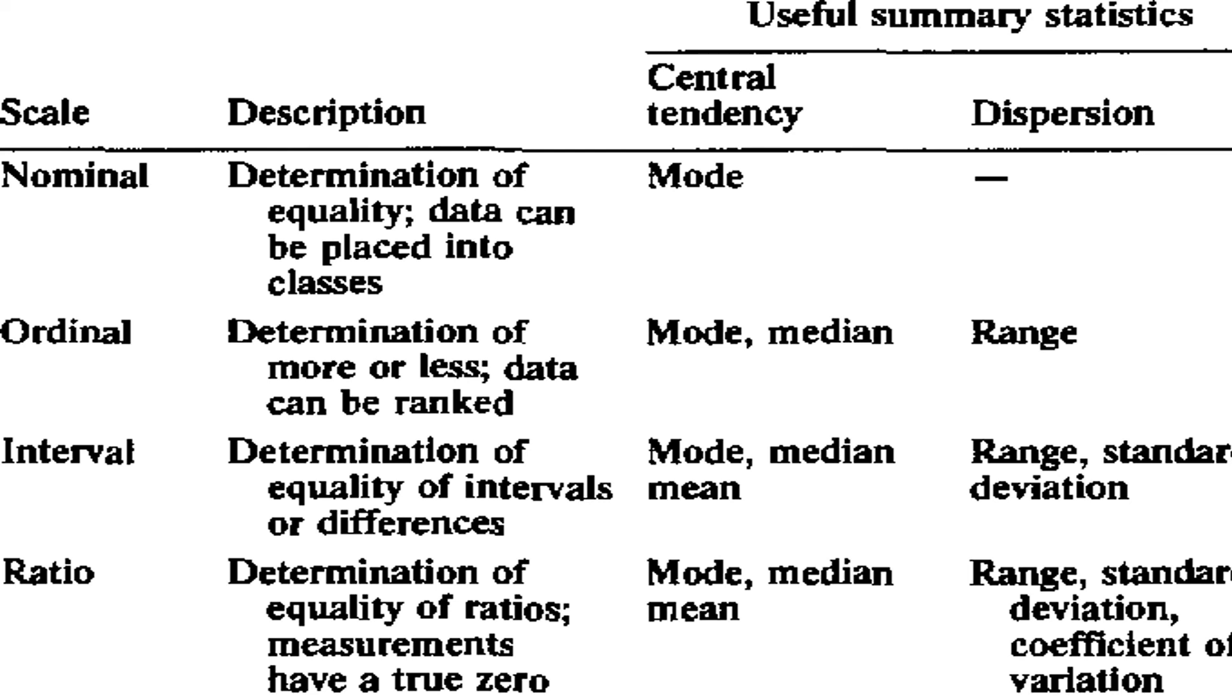Then finally the ratio scale of measurement. Here determination of equality of ratios. Measurements have a true zero. The statistical treatments - under central tendency we can find mode, median and mean. And under dispersion we can find range, standard deviation as well as coefficient of variation.